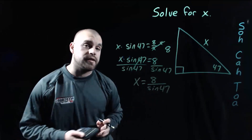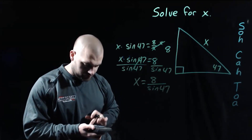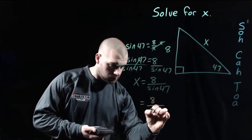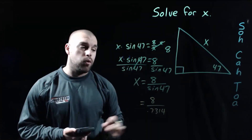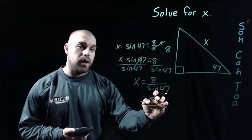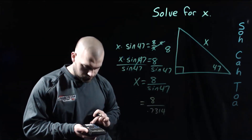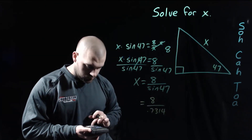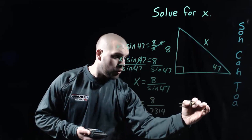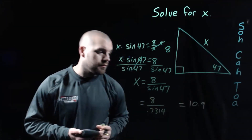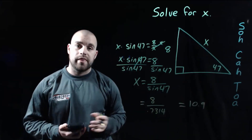We take the sine of 47 in our calculator and get about 0.7314. Dividing 8 by that decimal, we get about 10.9 as our answer. That's going to be it for this video. Thank you for watching.